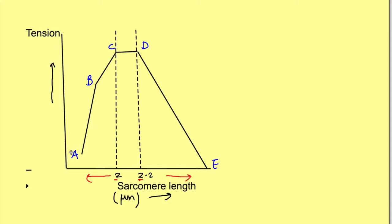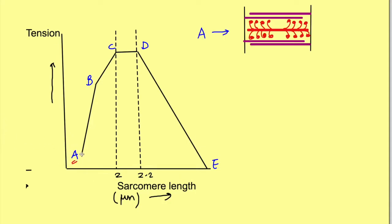At point A, the sarcomere length is quite short. The sarcomere consists of actin and myosin filaments. At this short length, most of the actin filaments have overlapped each other. For force of contraction, we want the myosin heads to interact with the active sites on actin — more interaction means more pulling force. At point A, almost all the actin is already overlapped and there can hardly be any further shortening. Very few active sites on actin interact with myosin heads, so the tension and force generated is very low.